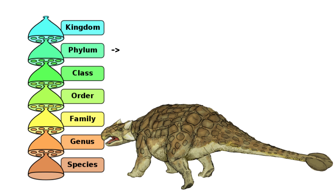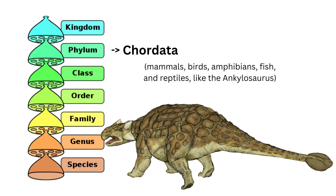Moving on to the phylum level. Phylum further divides the animal kingdom into distinct groups based on anatomical characteristics. For example, Chordata includes animals with a backbone, such as mammals, birds, amphibians, fish, and reptiles, like the Ankylosaurus.